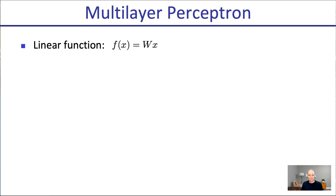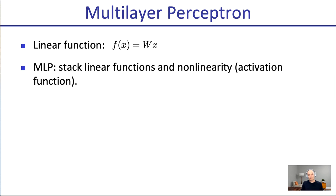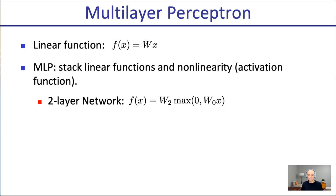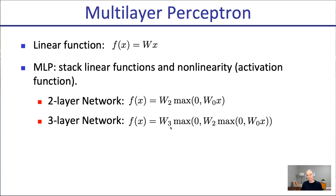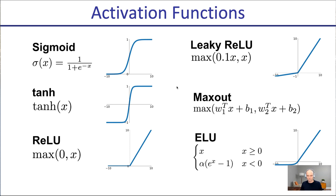A multi-layer perceptron: a single unit computes F(x) = W * x (matrix multiply) then applies a non-linearity. A two-layer network does a matrix multiply, then ReLU (set entries below zero to zero, keep those above), then another matrix multiply. A three-layer network repeats this one more time. Common non-linearities are ReLU (max), sigmoid, leaky ReLU, and tanh — probably the four most popular today.